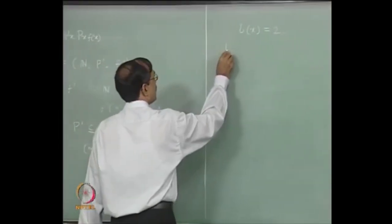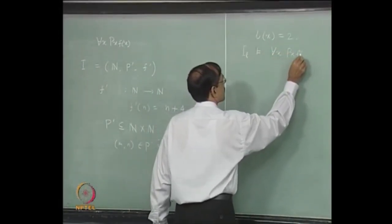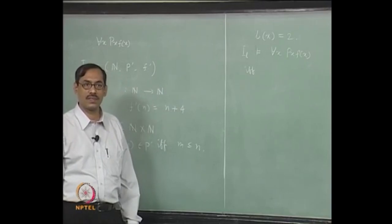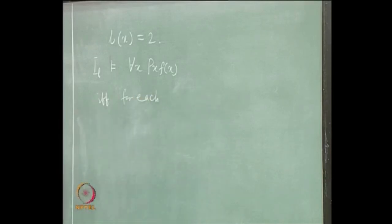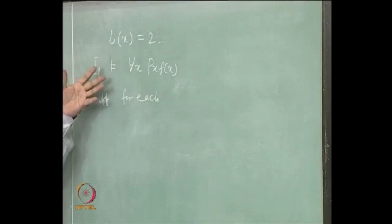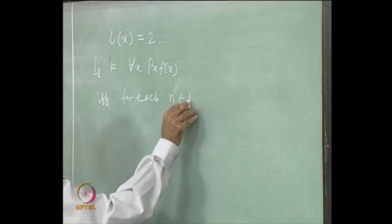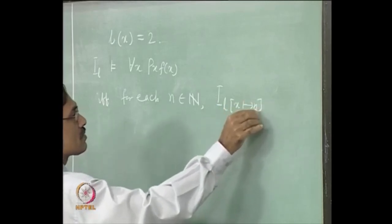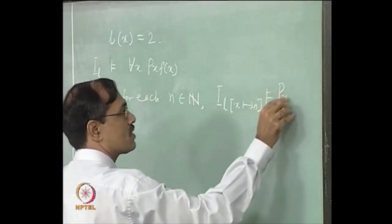We have the state i, l. So i, l will satisfy ∀x P(x, f(x)) if and only if for each element in the domain, the obtained valuation where x is fixed to that element satisfies the formula. That is, for each n in the natural numbers, i, l with x fixed to n, should satisfy P(x, f(x)) without the quantifier.